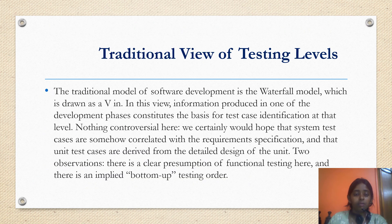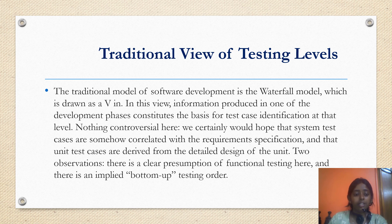Before moving on to alternative life cycle models in software testing, we will be going through what is the traditional view of testing levels. The traditional model of software development is the waterfall model, which is drawn as a V. In this view, information produced in one of the development phases constitutes the basis for test case identification at that level. We certainly would hope that system test cases are somehow correlated with the requirement specification and that unit test cases are derived from the detailed design of the unit.